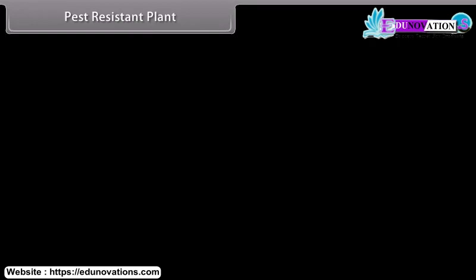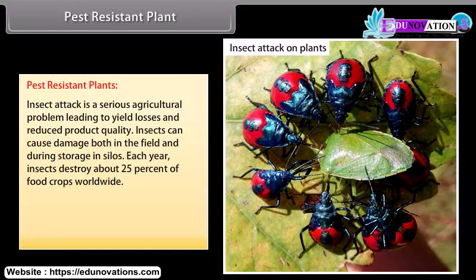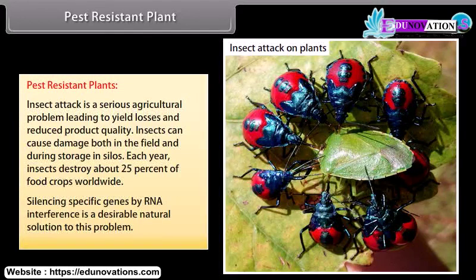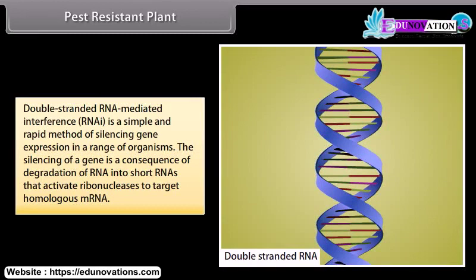Pest-Resistant Plants: Insect attack is a serious agricultural problem leading to yield losses and reduced product quality. Insects can cause damage both in the field and during storage in silos. Each year, insects destroy about 25% of food crops worldwide. Silencing specific genes by RNA interference is a desirable natural solution to this problem. Double-stranded RNA-mediated interference (RNAi) is a simple and rapid method of silencing gene expression in a range of organisms. The silencing of a gene is a consequence of degradation of RNA into short RNAs that activate ribonucleases to target homologous mRNAs.